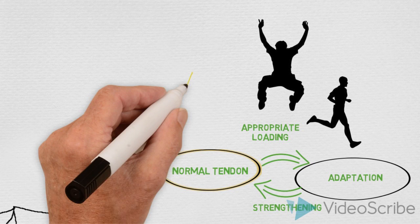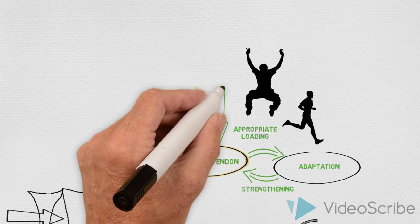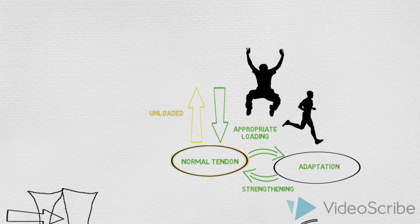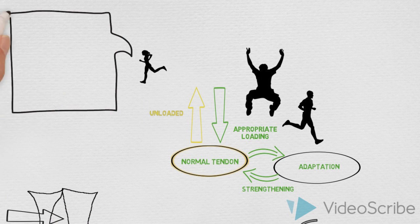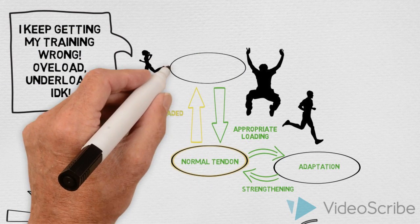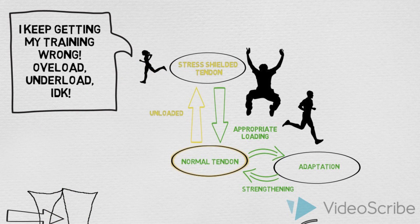It is also possible to relatively unload a tendon, either when returning from injury or in the case of athletes who vary from being relatively unloaded, having appropriate load, to excessively loading. The unloaded tendon becomes stress shielded whereby the superficial portion of tendon bears too much load and the deep portion too little.